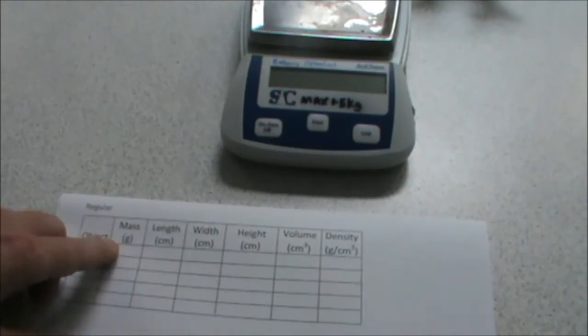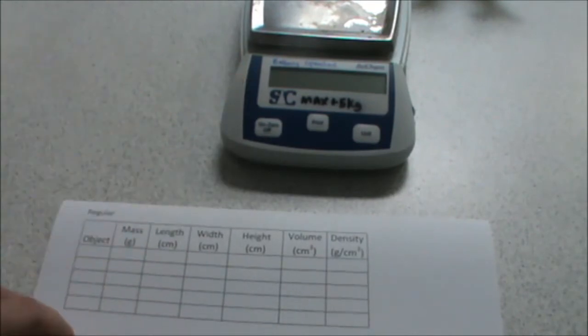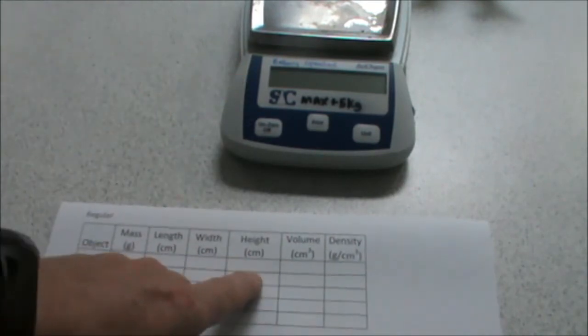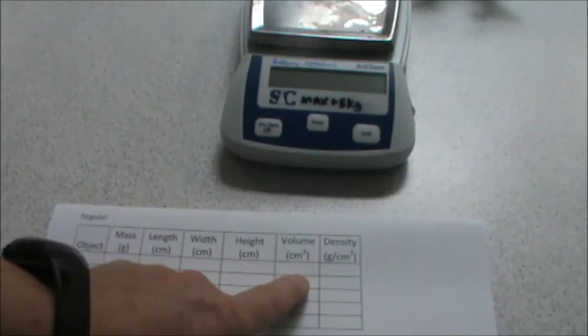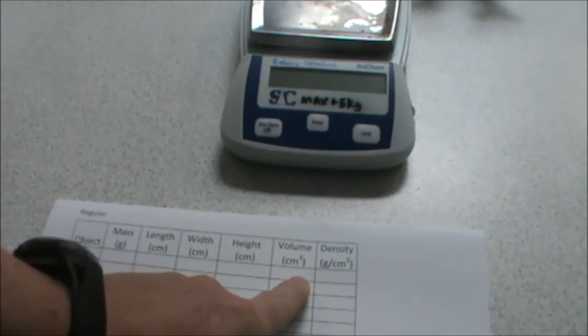In order to record the information for our regular shaped object, we're going to need a results table. We will identify the object, measure the mass on our top pan balance, then measure the length, width and height. These three things are multiplied together to calculate the volume. Then we calculate the density by doing mass divided by volume.